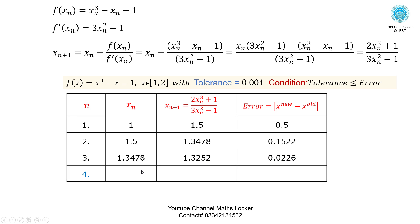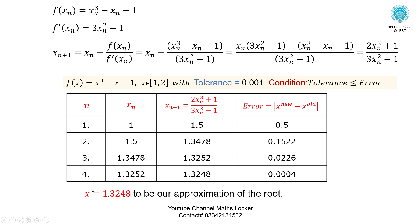Iteration 4: Choose the updated xₙ, place in the formula, simplify, take the difference and absolute value. The error is approximately 0.004. Since tolerance 0.001 is not less than or equal to the error, stop the loop. The root is x ≈ 1.324.